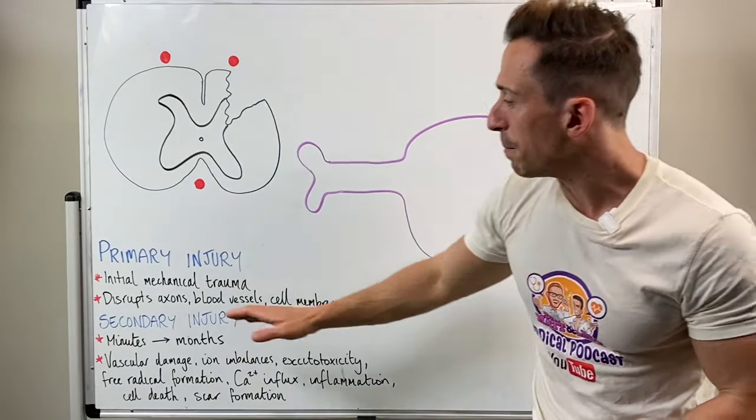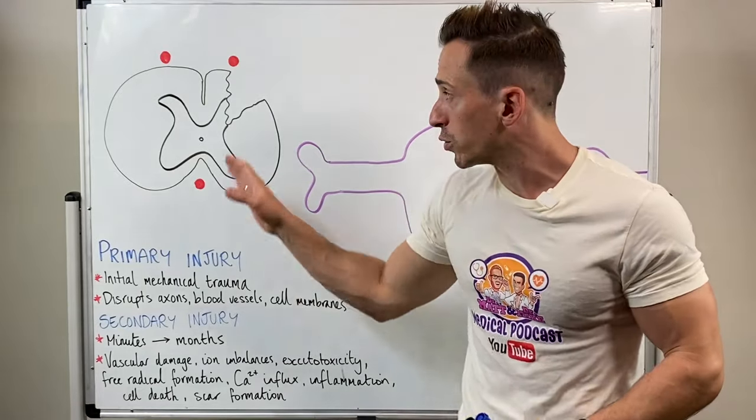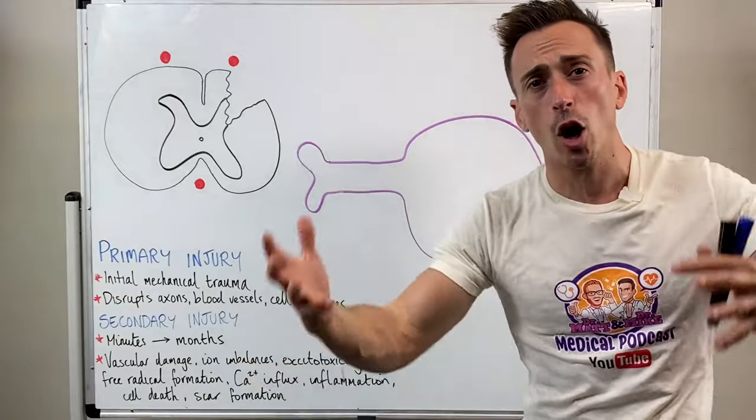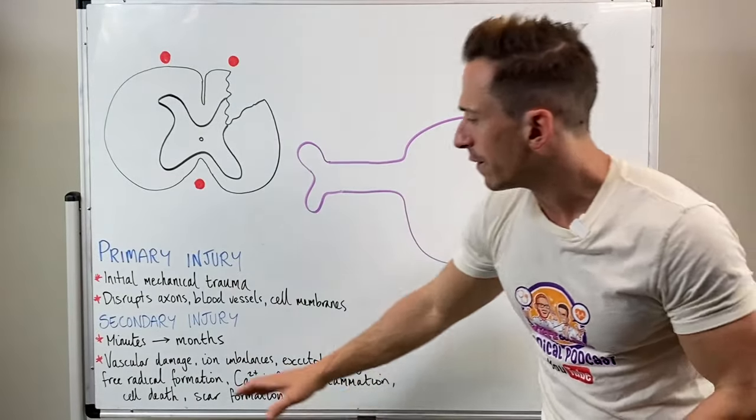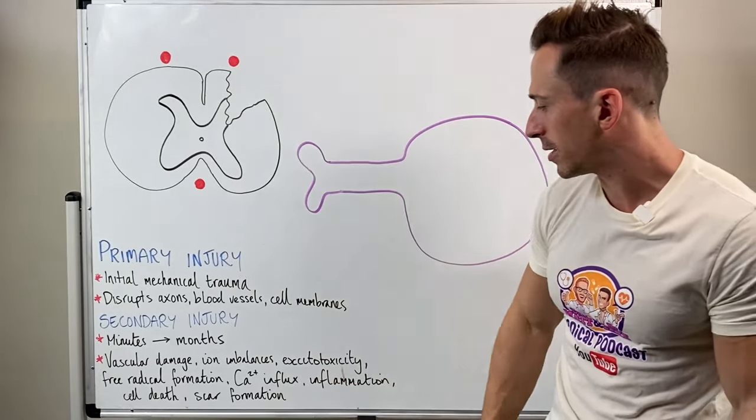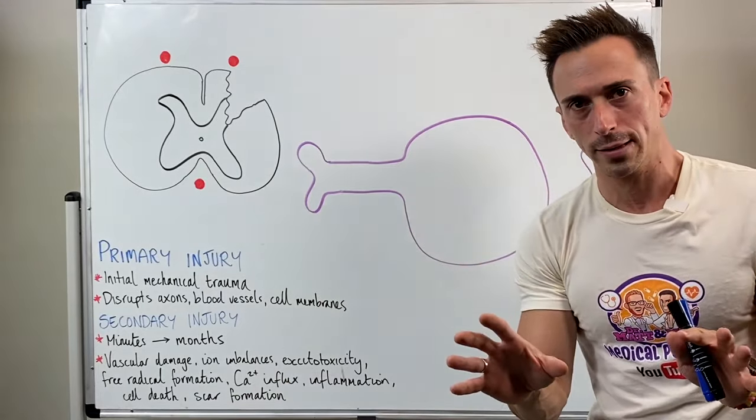The secondary injury phase is what's happening minutes to months and sometimes years after the initial spinal cord injury. It's characterized by a whole cascade of events: vascular damage, iron imbalances, excitotoxicity, free radical formation, inflammation, scar formation. I'm going to talk about all of these.